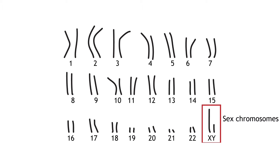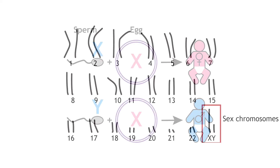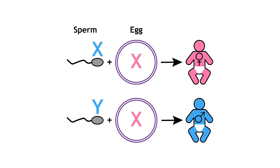The last pair of chromosomes is responsible for determining if an individual becomes a male or female. These are called the sex chromosomes. In humans, the sex chromosomes are named either X or Y. Fertilization occurs when a sperm cell from the father fuses with an egg cell from the mother. All egg cells contain one X sex chromosome. Sperm cells contain either one X or one Y chromosome, which means chromosomal sex in humans is determined by the sperm. If a sperm carrying an X chromosome fertilizes an egg, the resulting fetus will be XX and a female, whereas if a sperm carrying a Y chromosome fertilizes an egg, the resulting fetus will be XY and a male.